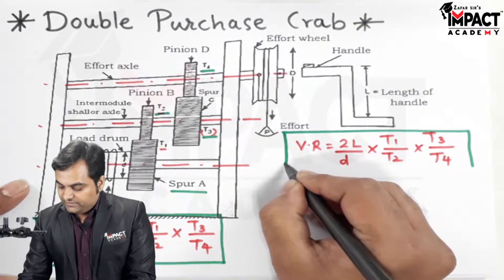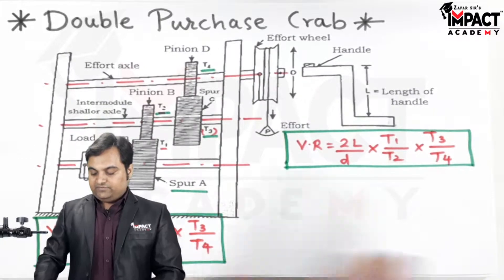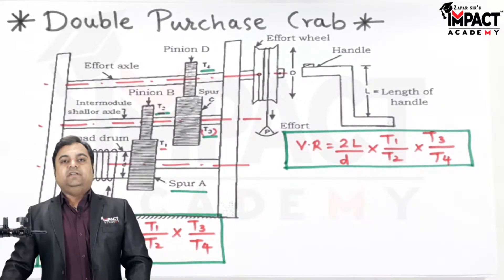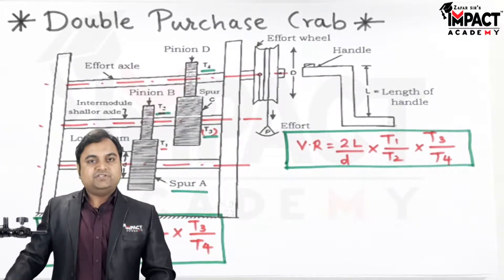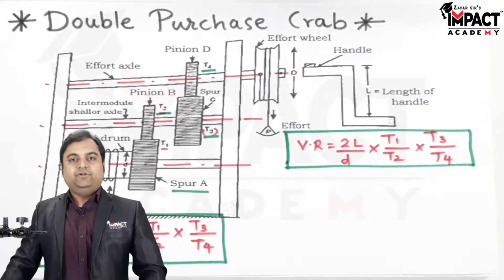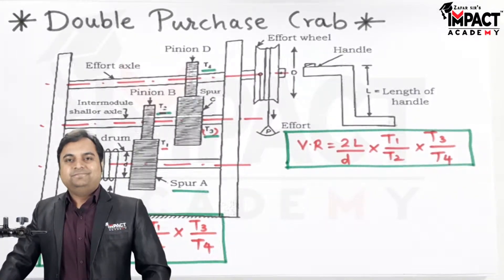By using this formula we can get the velocity ratio for a double purchase crab. Once we know the velocity ratio and mechanical advantage, which is load upon effort, we can easily calculate the efficiency for a double purchase crab.